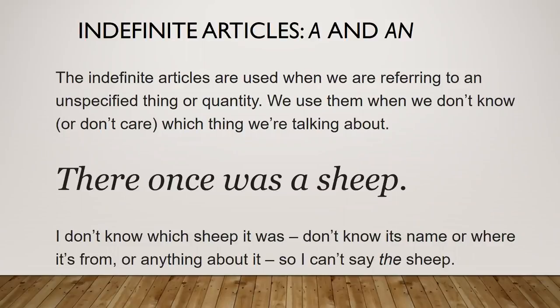Indefinite articles 'a' and 'an' are used when we refer to an unspecified thing or an unspecified quantity. We use these in writing when we either don't know or don't care which specific thing we're talking about. For example: 'There once was a sheep.' We're not giving any additional context — we don't know its name, where it comes from, anything about it — so we use the indefinite article.